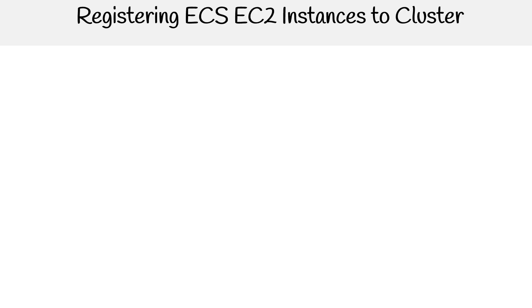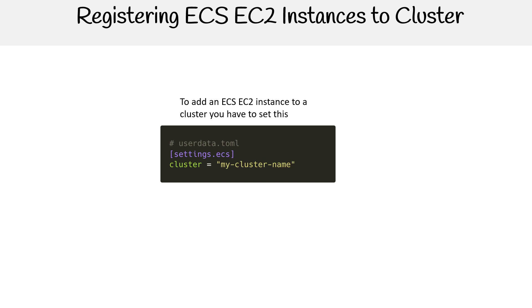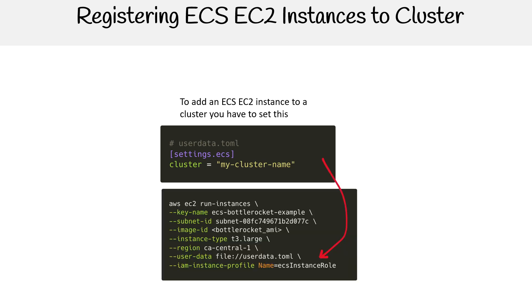Since we're talking about EC2 optimized instances, the way you add them to your cluster is by setting the ECS configuration in your user data. It goes into a settings file — the settings.ecs file — and you can use it as a TOML file, or there's another way, which you'll see in the lab. The key point is that if you do not set your cluster name, the EC2 instance won't know to add itself to the auto scaling group for your capacity provider for ECS EC2. This will make more sense when we actually do the lab.